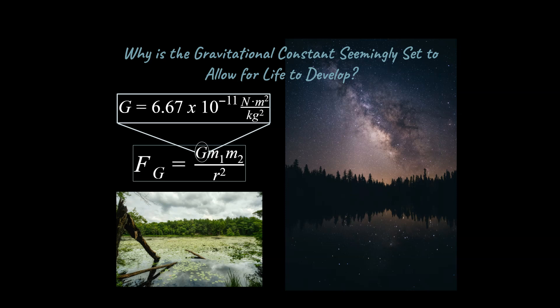It turns out if this constant was something like one in a billion smaller in value, then we wouldn't have had star formation in the way that we had, and probably wouldn't have had heavier elements like carbon formed in our universe. Fusion would be impacted and heavy element formation would be impacted. Life probably would not have developed if G was just a tiny bit less. And if the G value was just a tiny bit greater — something like one in a billion greater — we would have had a big crunch after a big bang. So it's set at a value that is precisely needed to allow for intelligent life to exist.